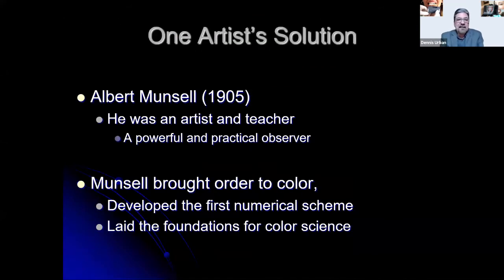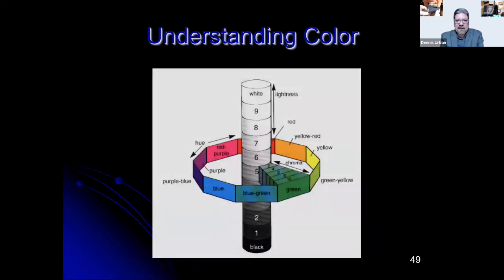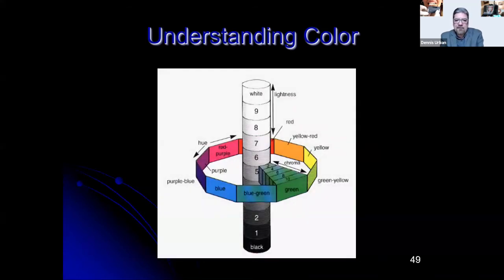Albert Munsell was an artist and teacher who brought order to color. He developed the first numerical scheme for color and laid the foundations for color science across all industries. The color sphere, scientifically known as the CIE L*a*b* sphere, was created as an international standard of color representation. This terminology is expressed in every industry worldwide defining color coordinates, and the sphere contains over 10 million color variables.